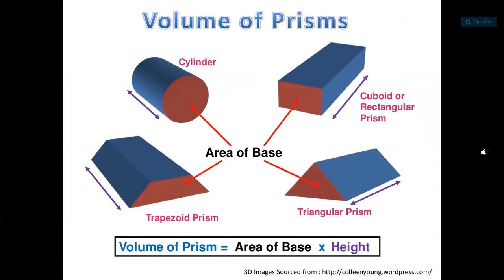We have a formula: the volume of a prism is the area of the base multiplied by the height. This formula is applicable for the trapezoid prism, rectangular prism, triangular prism, or a cylinder.